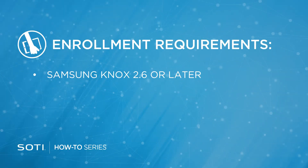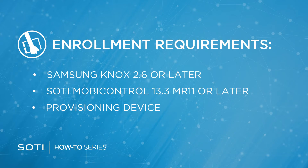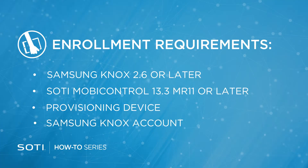There are a couple of technical requirements we need to go over before proceeding. First, your device must be capable of installing Samsung Knox version 2.6 or higher. Most Samsung devices made in 2016 or later can do this. Second, SOTI MobiControl version 13.3 Maintenance Release 11 or above is required to enroll Samsung Knox devices. You will also need a provisioning device to assist in enrolling your Samsung devices — this can be any Android Google Mobile Service certified device of your choice. Finally, you will need a Samsung Knox account with access to the Knox Mobile Enrollment Portal.